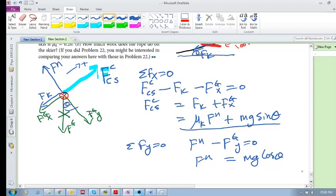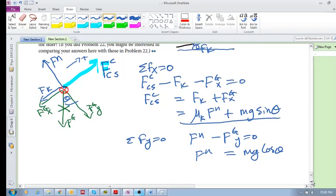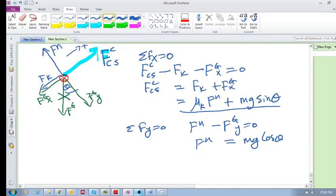So f_n is mg cos theta. If we plug this back in there, we're going to see the tension in the cable is equal to mu_k times mg cos theta plus mg sin theta.